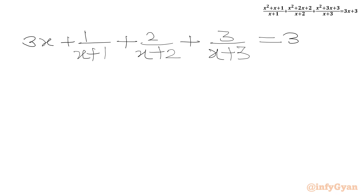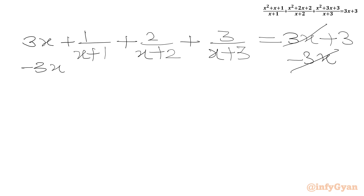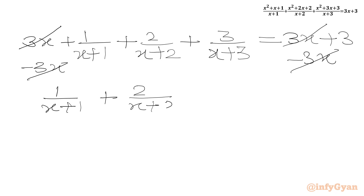The RHS is 3x plus 3. Now we will subtract 3x from both sides. We can cancel 3x from both sides, leaving us with 1 over (x plus 1) plus 2 over (x plus 2) plus 3 over (x plus 3) equal to 3.